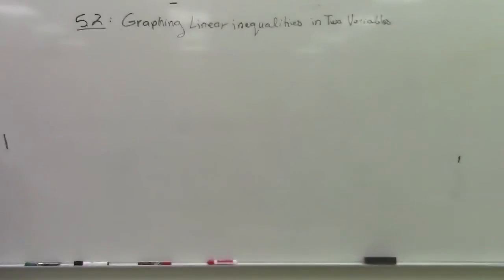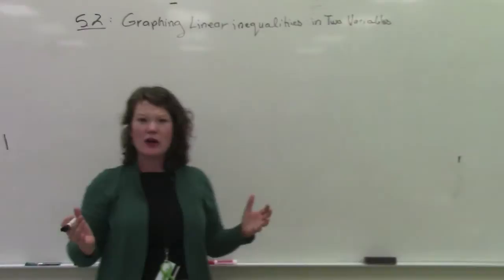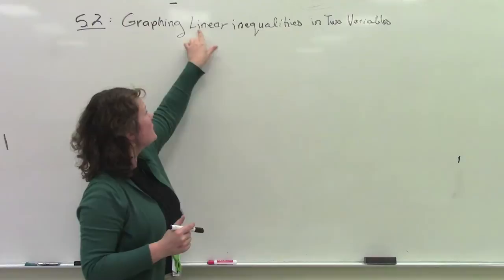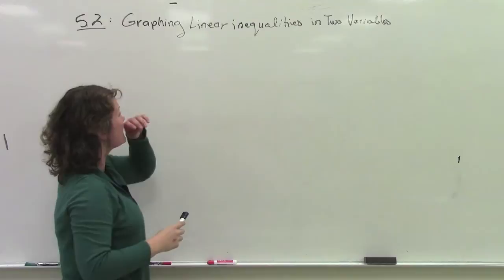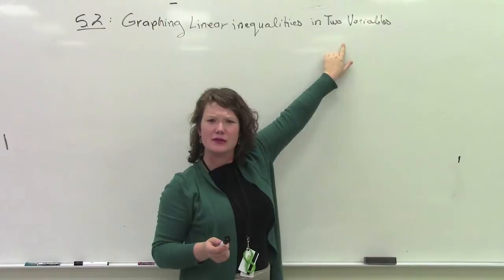Point 2, graphing linear inequalities in two variables. So let's think about how this is different from yesterday. Well, we're talking about something that's linear. Parabolas, or quadratic functions, are not linear because they have a curve to them. Linear functions are literally lines. So this is going to be slightly different than yesterday. What else is different? Two variables. We're not going to have just one variable, not just the x variable.